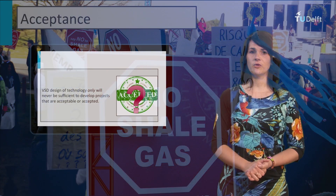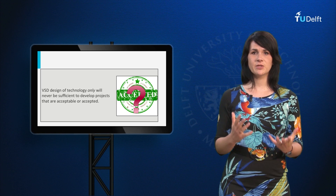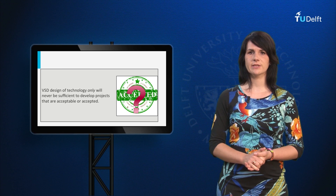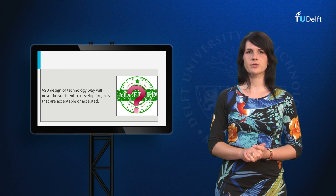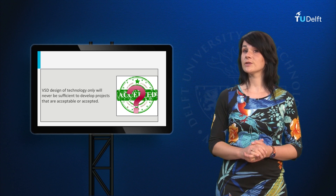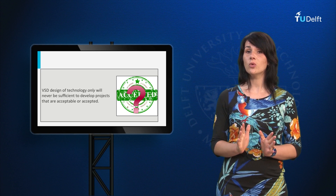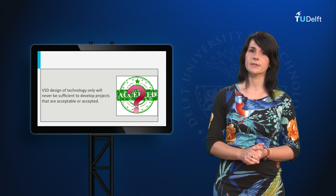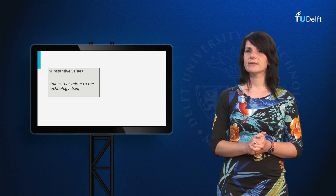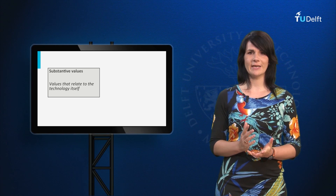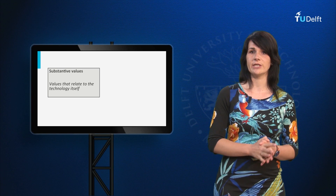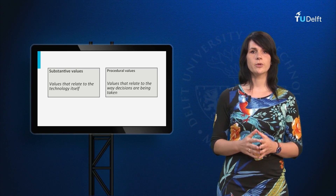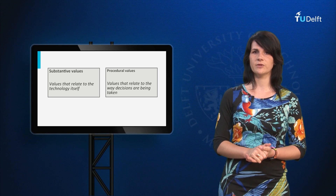One of the claims of responsible innovation is that if these projects are designed in such a way that they are more acceptable — so sensitive to the values at stake — this will increase public support for such projects. However, value-sensitive design of technology alone will never be sufficient to develop projects that are acceptable or accepted. This has to do with the fact that besides substantive values, so values that relate to the technology itself such as safety or efficiency, there are also procedural values that determine the acceptability of a technology.